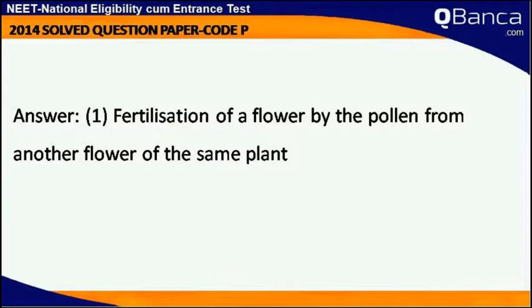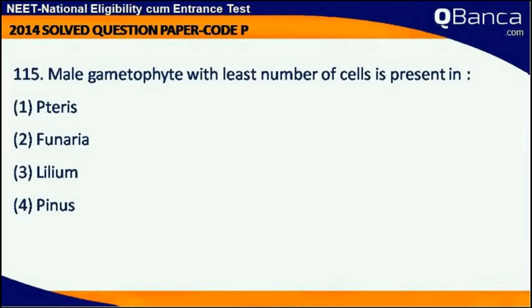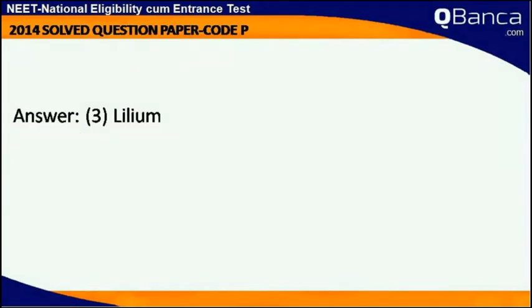Fertilisation of a flower by the pollen from another flower of the same plant. Male gametophyte with the least number of cells is present in — Answer: Cilium.